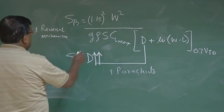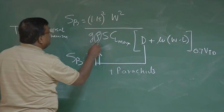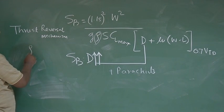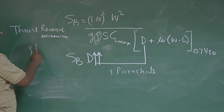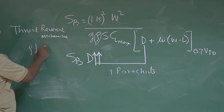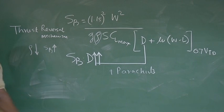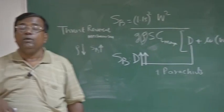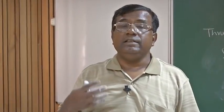You can also see, now you are expert, you can also see that ρ, if ρ goes down, S_B goes up. That means, if you are touching down at a high altitude airport, where the density of air is less than density of air at sea level. So, that airport, when you are landing, be careful, you will be requiring larger breaking distance.